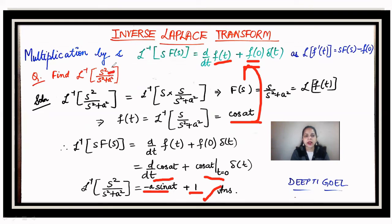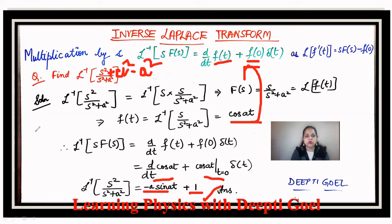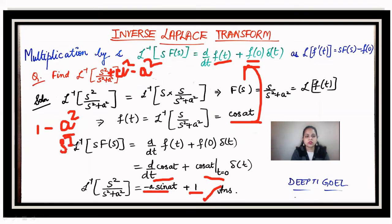This could also be solved by adding and subtracting a² in the numerator, splitting s²/(s²+a²) into two terms: 1 minus a²/(s²+a²). Then applying the Laplace inverse on each part separately gives the same result.